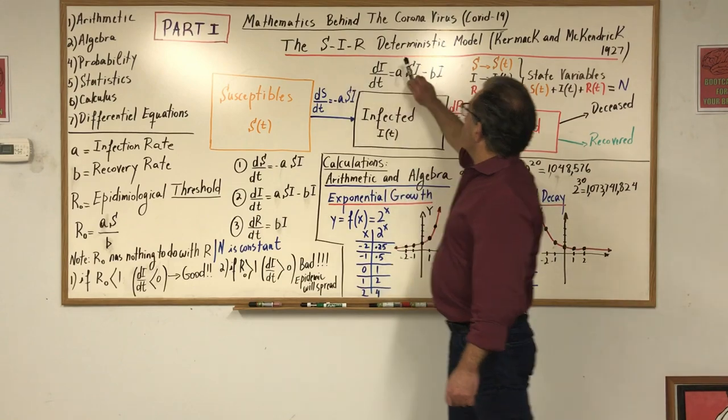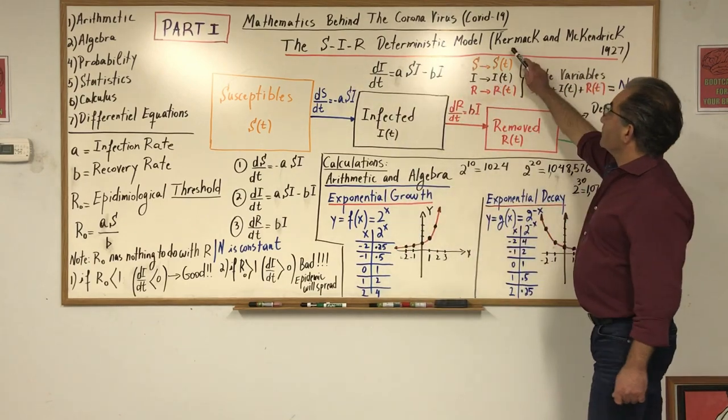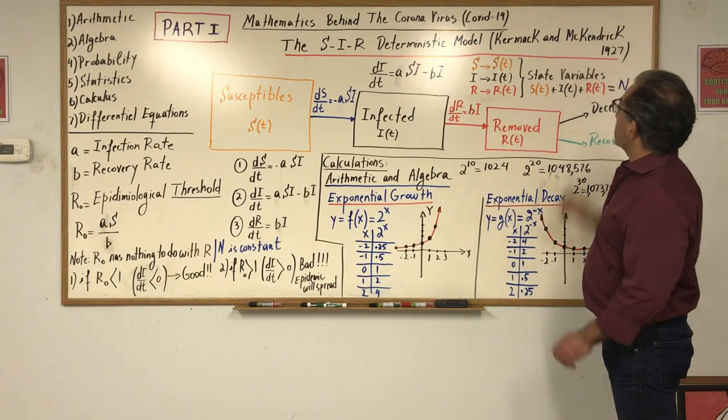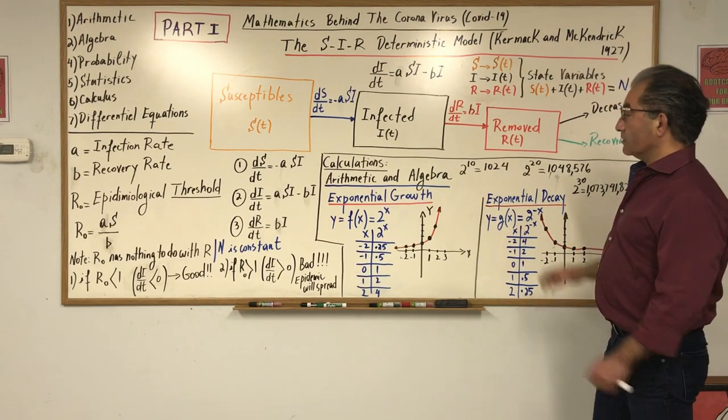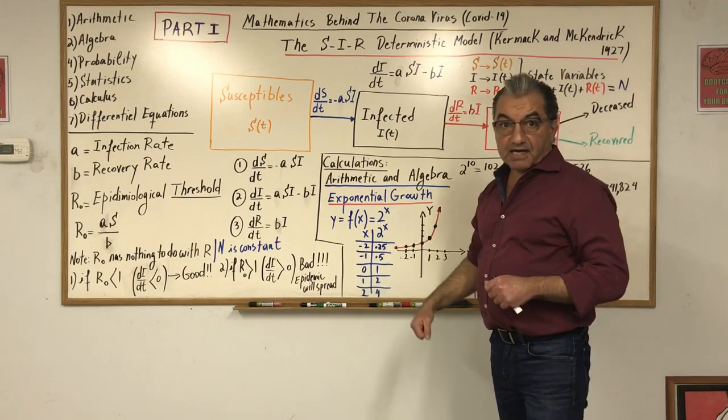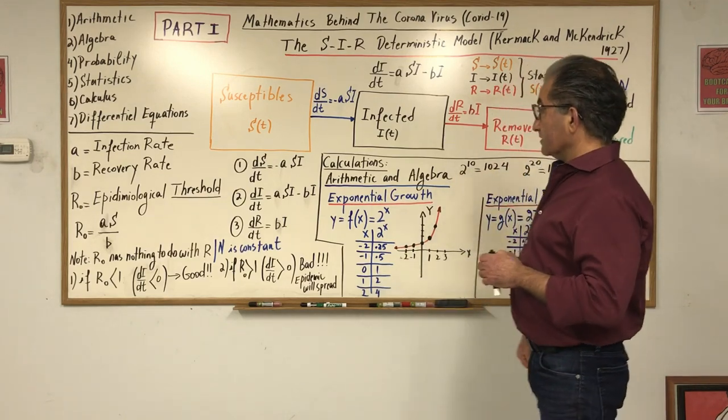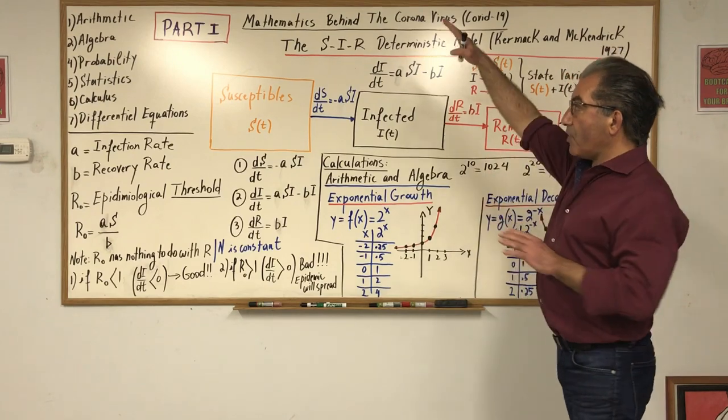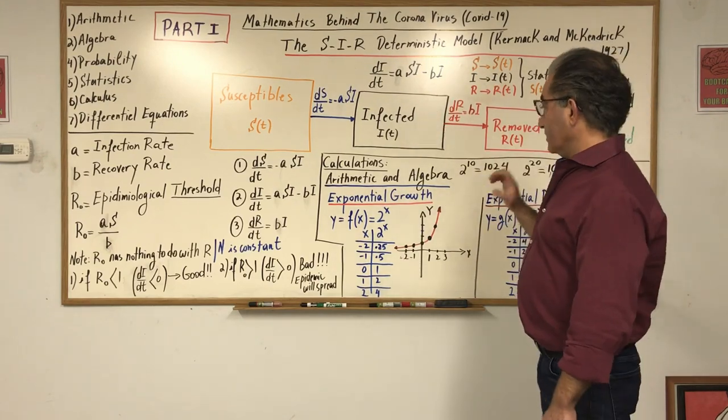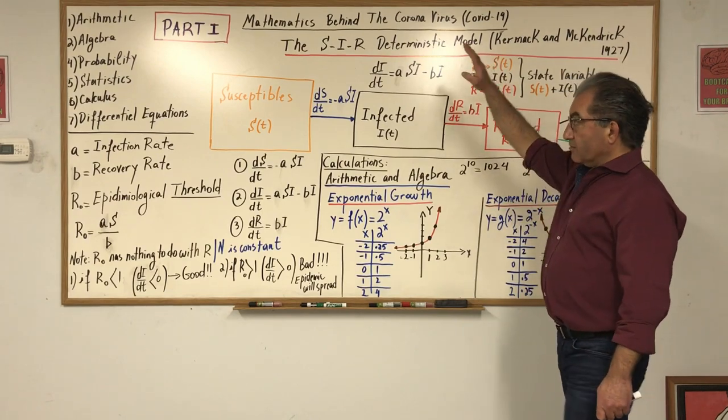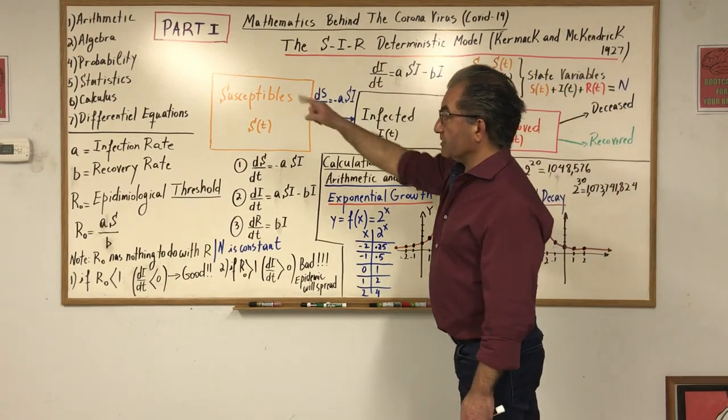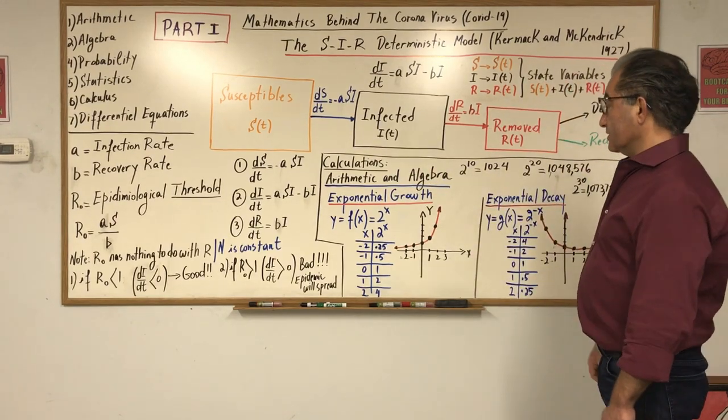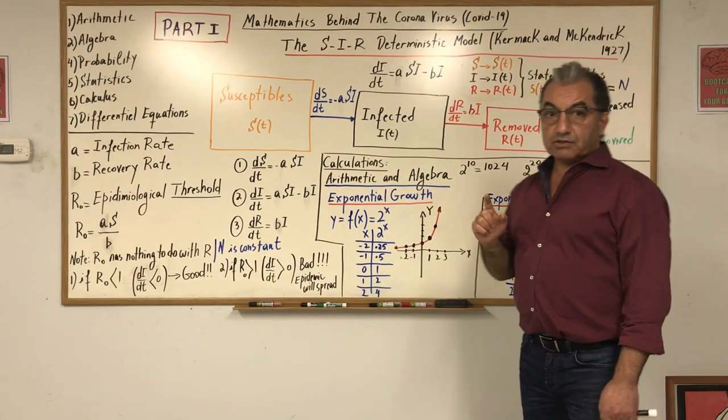This model is called SIR - it's a deterministic model - and it was developed by Kermak and McKendrick in 1927. They did a great job. I know that you see the mathematics on the board, it's something that can look complicated to you, but there are parts of it. If you understand each part, then that's good enough. I'm going to start with the arithmetic and algebra and go into calculus and differential equations.